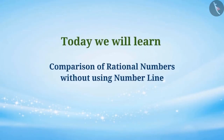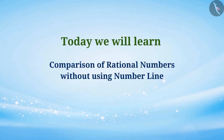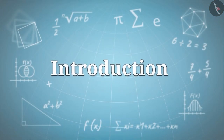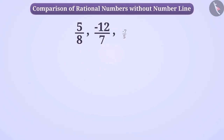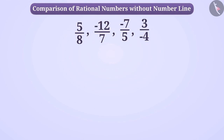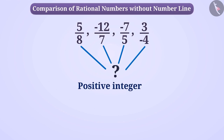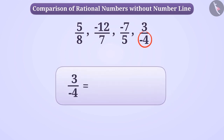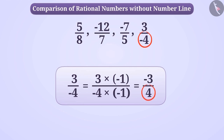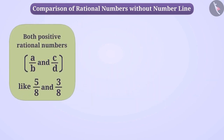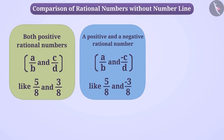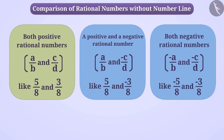Today, we will learn about the comparison of rational numbers without using a number line. We can compare rational numbers even without using the number line. To compare, we first see whether the denominator of a rational number is a positive integer or not. If the denominator is a negative integer, then we multiply both the numerator and the denominator by minus 1 to make the denominator a positive integer. By doing this, we get either both positive rational numbers, or a positive and a negative rational number, or both negative rational numbers. Let's find out how we can compare them in each situation.